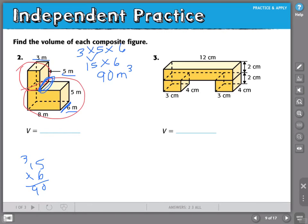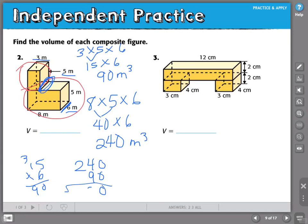Now we need to find 8 times 5 times 6. This would be 40. 40 times 6 is 240. If I take 240 and add 90, I get 330 cubic meters.